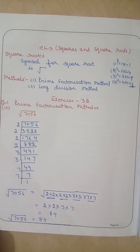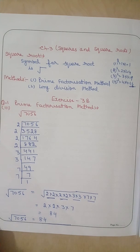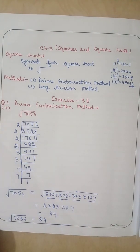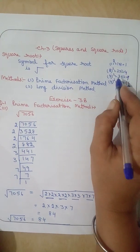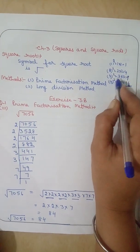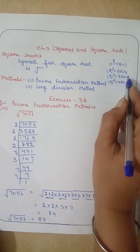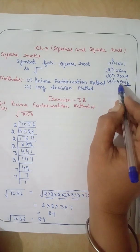In the previous video, we have discussed about squares. Now we will discuss about square roots. In squares, 1 square is equal to 1 into 1, which is 1. 2 square is equal to 2 into 2, which is 4. 3 square is equal to 3 into 3, which is 9. 4 square is equal to 4 into 4, which is 16.